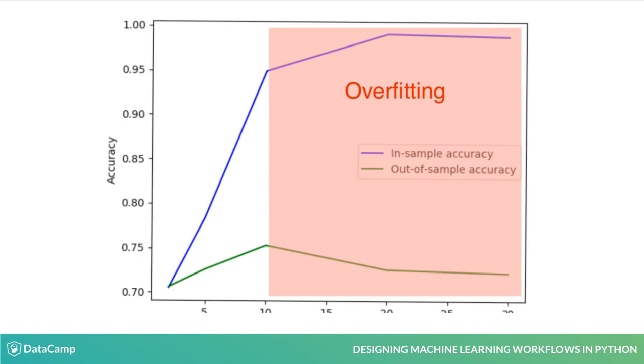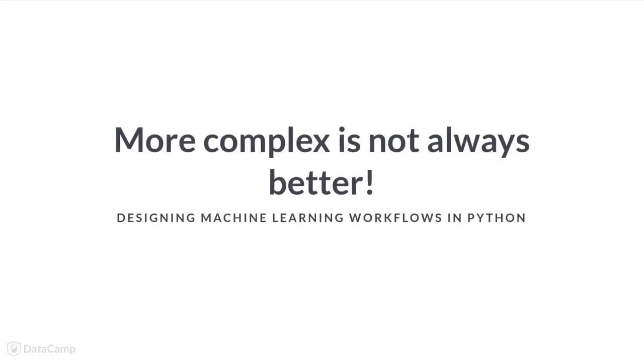Trying too hard to memorize the training data leads to worse performance on the test data. This also happens in real life. If you memorize the answers to past exam questions, you will only do well on the exam if the same questions appear in exactly the same wording. You're already wiser than the average data scientist because you know that complex models are not always better than simple ones.